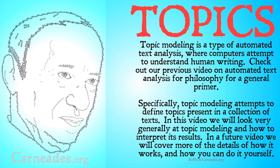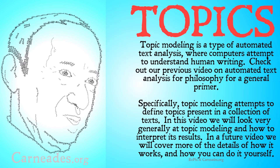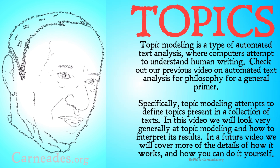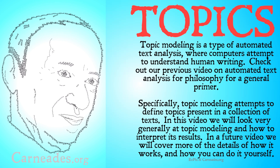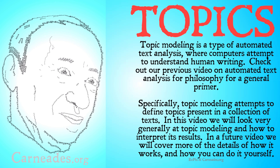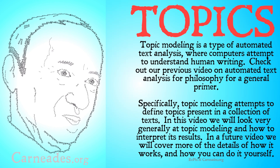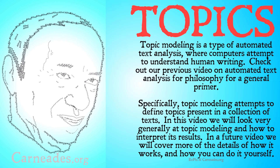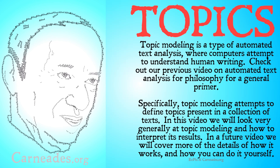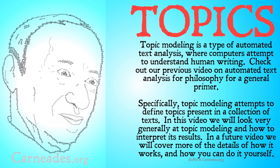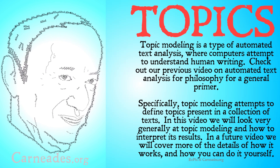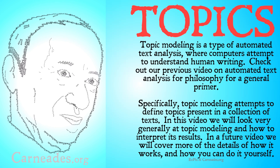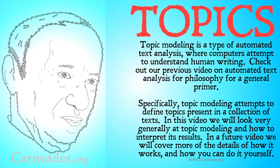Topic modeling is a type of automated text analysis where computers attempt to understand human writing. Check out our previous video on automated text analysis for philosophy for a general primer on what we're talking about when we're talking about automated text analysis and how we're using it in the context of philosophy as well as other humanities.